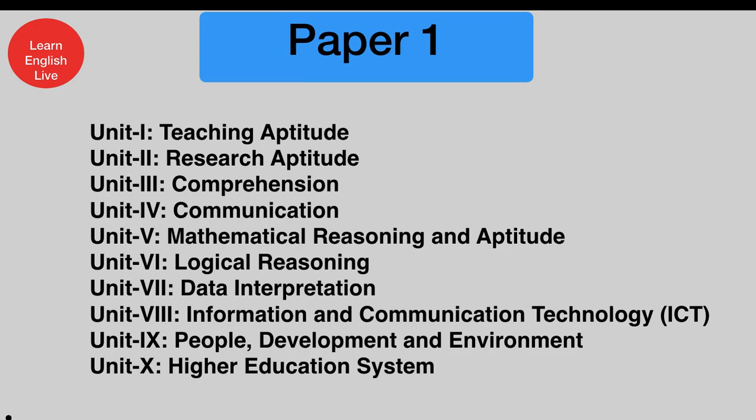In the higher education system section, questions come on university and college rankings like NIRF, and environment topics like Kyoto Protocol and Montreal Protocol. For research aptitude, questions are asked on types of research. Go through the theoretical portion from books and then practice MCQs from previous year papers — previous year papers are a must.